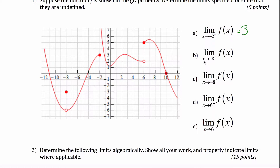What about approaching negative 8 from the positive side? Here's negative 8 right here. If I'm coming in from the positive side, I'm coming in this way, and the height right here appears to be approaching negative 6.